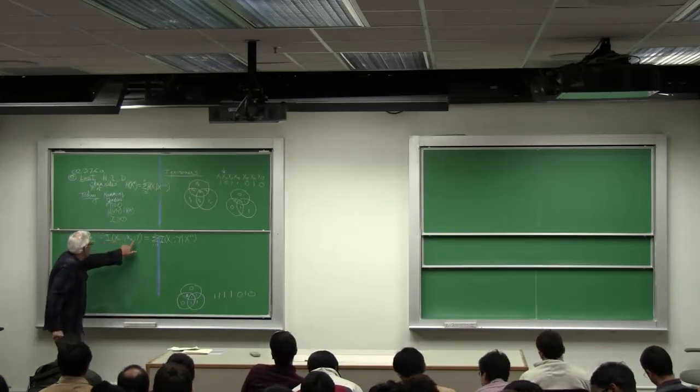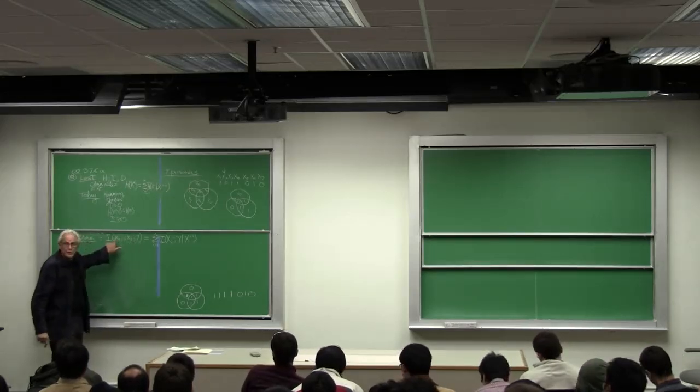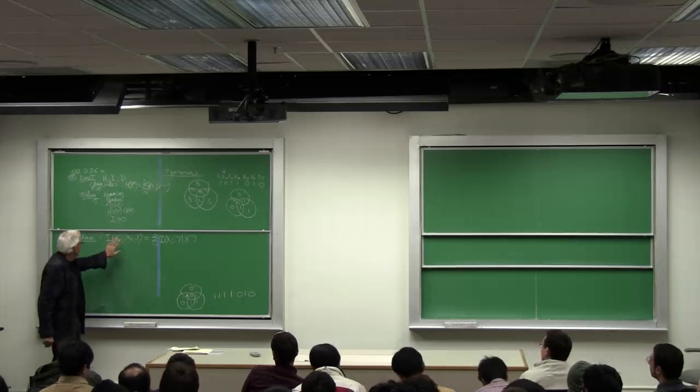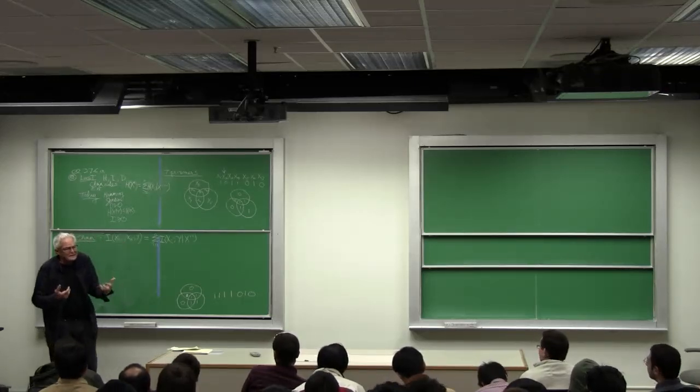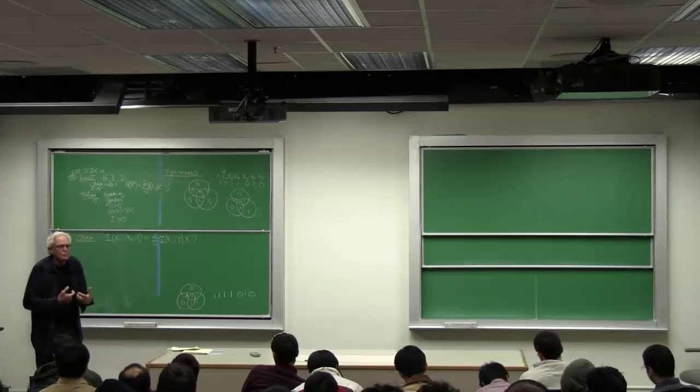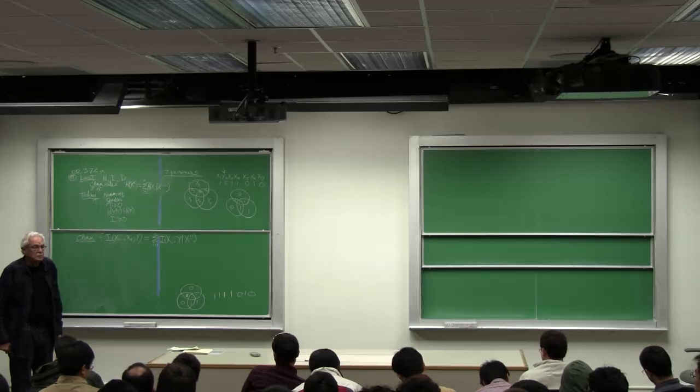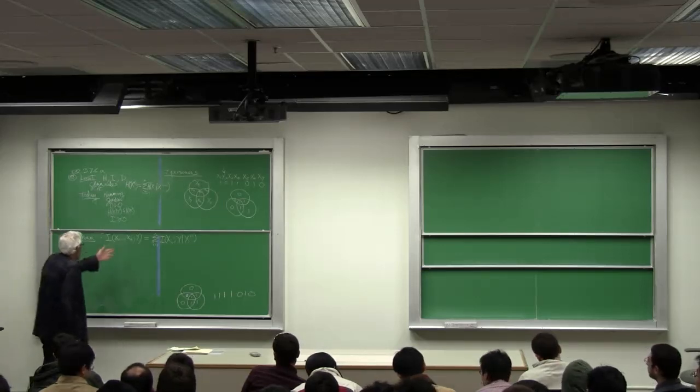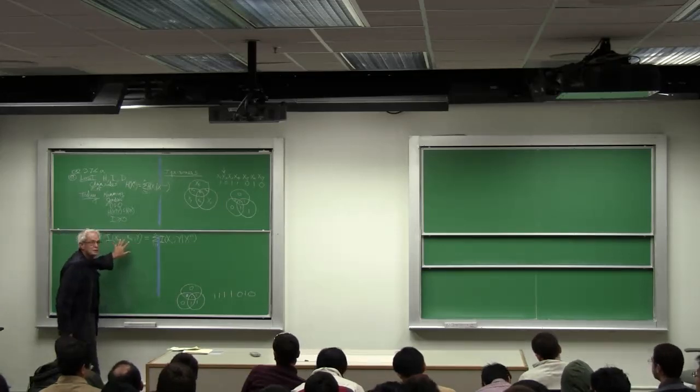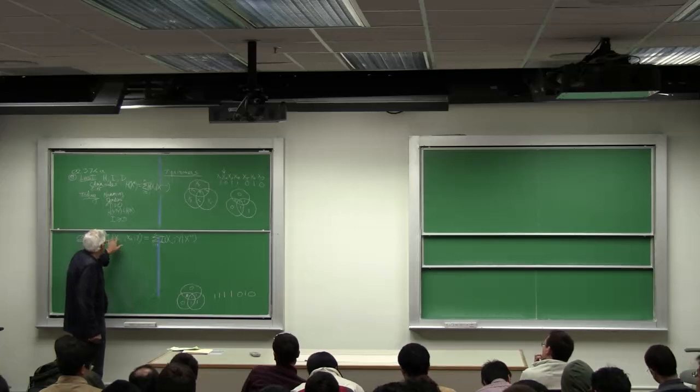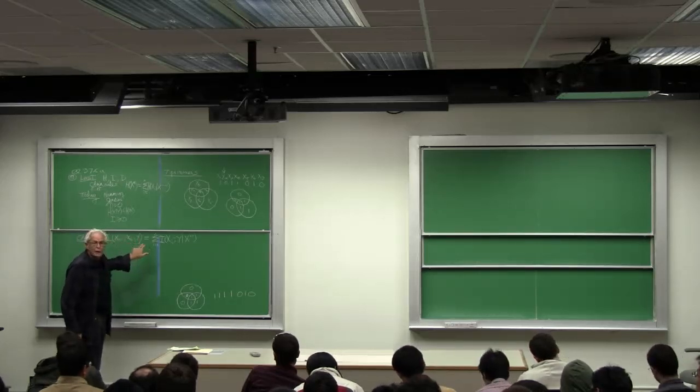Remember, by the way, this is a semicolon, these are commas. All right, remember the mutual information is going to be the resolvability of say y as observed by x, or x as observed by y.